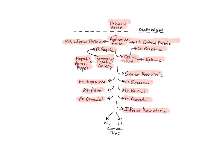The abdominal aorta ends near the upper part of the pelvic cavity as it divides into the right and left common iliac arteries near L4.